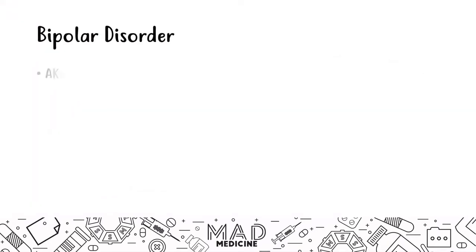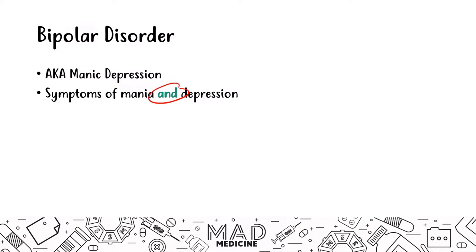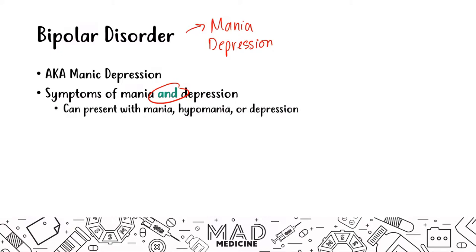Now let's move to bipolar disorder, also known as manic depression. In bipolar disorder, patients have symptoms of both mania and depression. We've already talked about major depressive disorder and other depression disorders in the psychiatry playlist. The mania can present as either hypomania or full mania, and the depression doesn't mean it's always constantly there like in MDD — it's more depression with atypical features. The key point is that symptoms of mania, hypomania, and depression fluctuate rapidly.